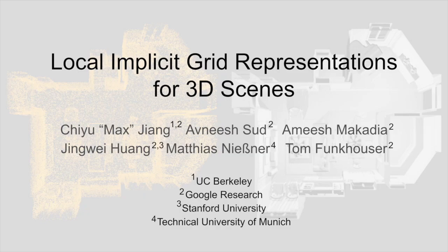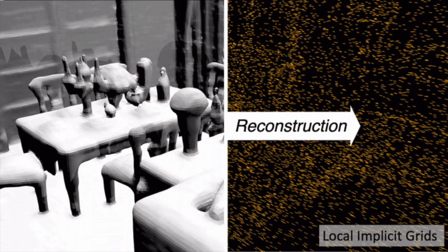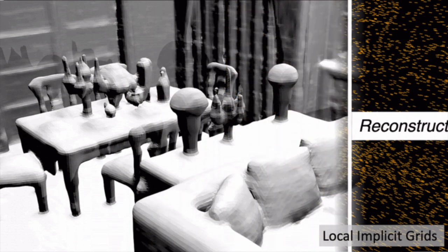We introduced local implicit grid representations, a learnable large-scale implicit shape embedding. Given an input point cloud, our learned 3D representation allows us to reconstruct large 3D scenes at high fidelity and generate high-quality output meshes.